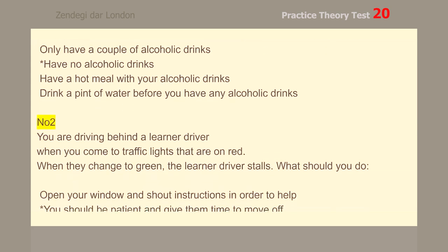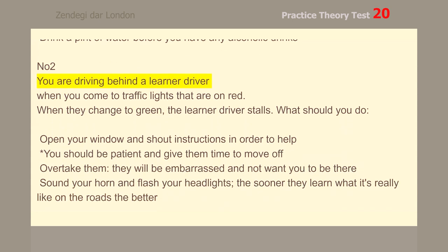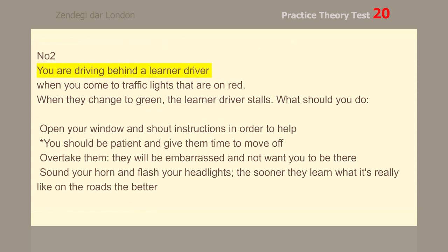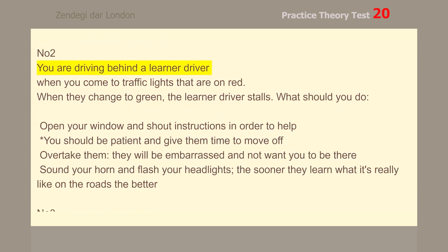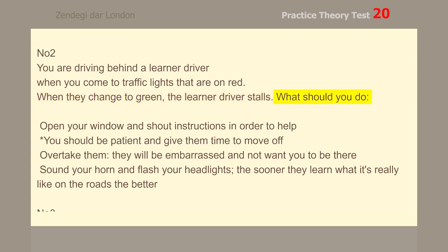Number 2. You are driving behind a learner driver when you come to traffic lights that are on red. When they change to green, the learner driver stalls. What should you do? You should be patient and give them time to move off.